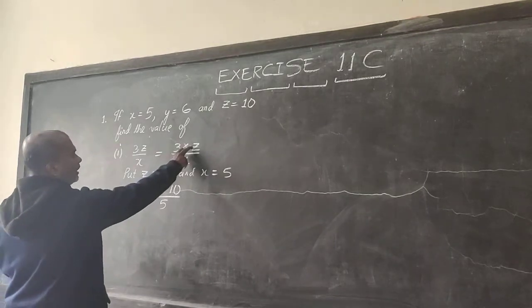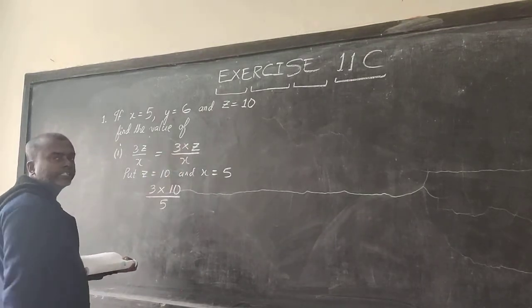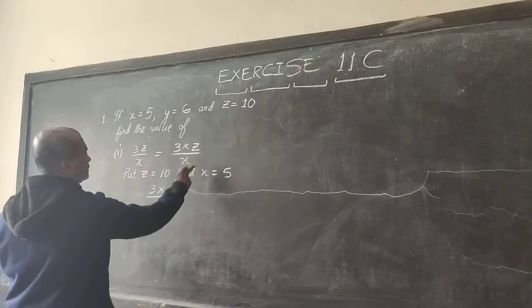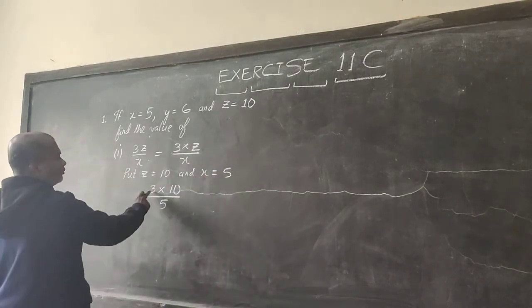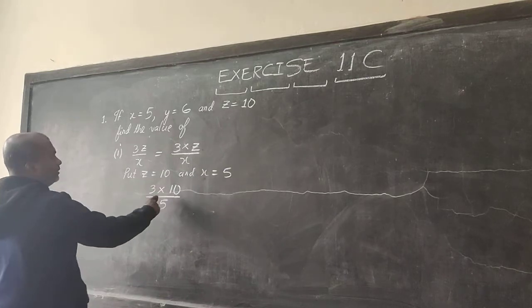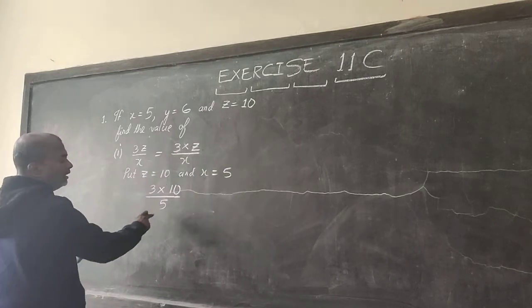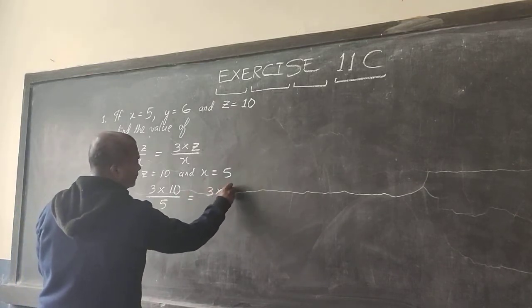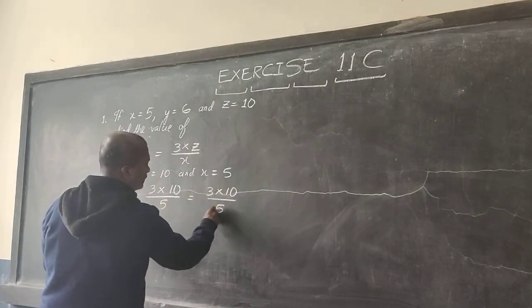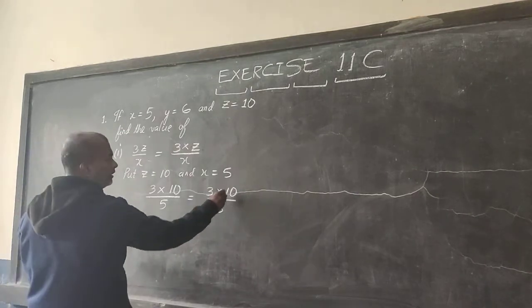What I have to do is put the values of the variables Z and X. Z is 10, X is 5. So 3 into Z means 3 into 10 divided by X divided by 5. So next step we have to simplify this. You can cancel 5 and 10.